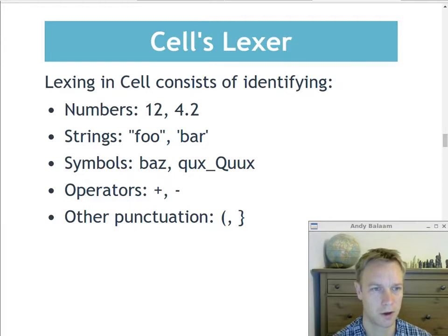They could be symbols, which are just words with no quotes around them. They could be operators like plus and minus. And they could be some special punctuation, like brackets, commas, curly brackets, curly braces.